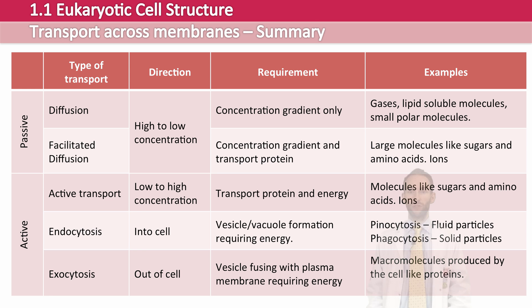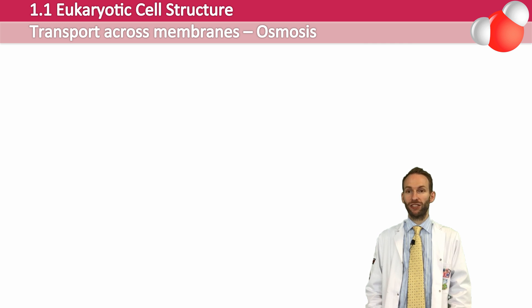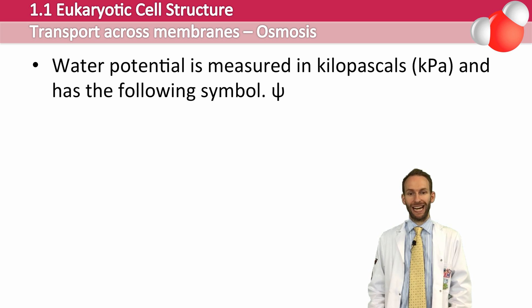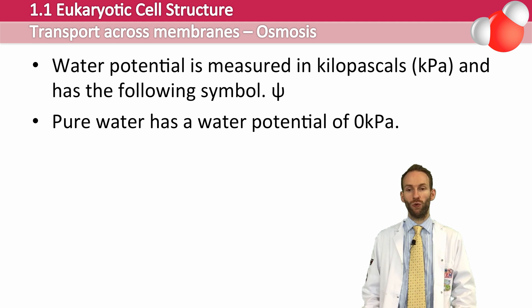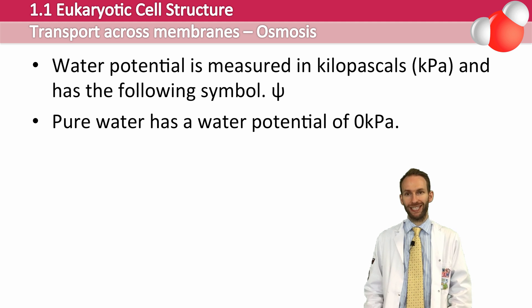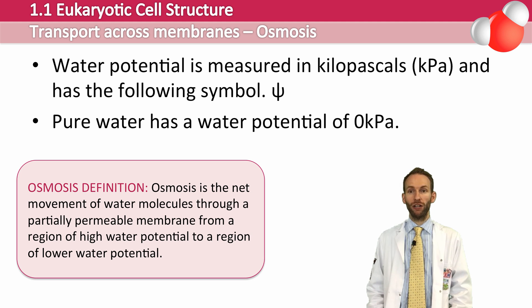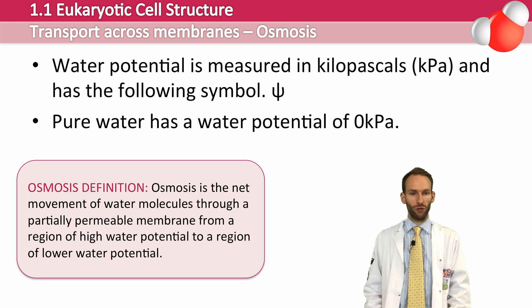Water moves across a membrane by a special type of diffusion called osmosis. It moves from an area of high water potential to low water potential. Water potential is measured in kilopascals and has a specific symbol. Pure water actually has a water potential of zero kilopascals, and the more solute you dissolve in the water, the lower the water potential becomes — so it actually goes into negative numbers. The definition of osmosis is the net movement of water molecules through a partially permeable membrane from a region of high water potential to a region of lower water potential.